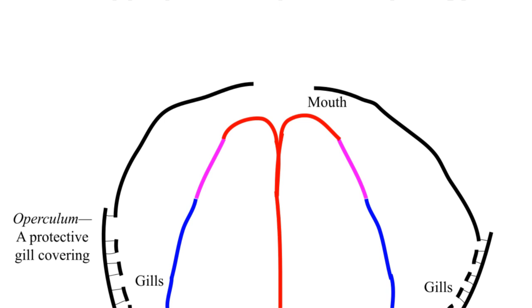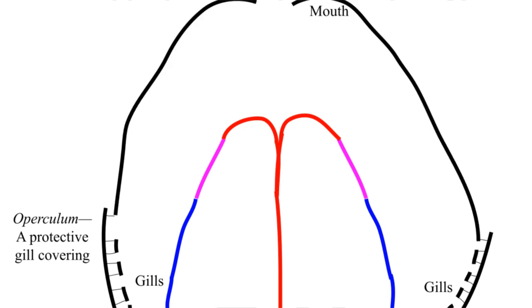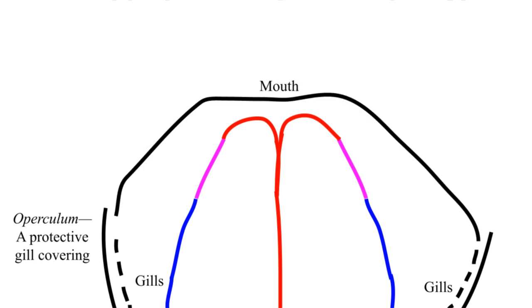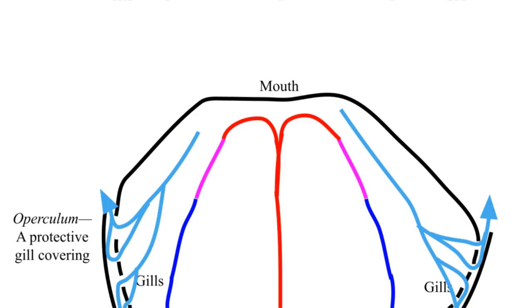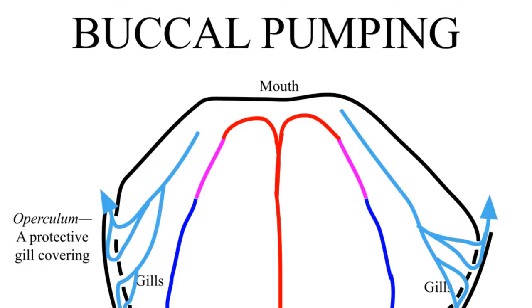It's a fish. With the mouth open and the gills closed, the mouth expands, drawing in water. With the gills open and mouth closed, instead of moving forward, the mouth contracts, forcing the water out through the gills. This process is called buccle pumping.